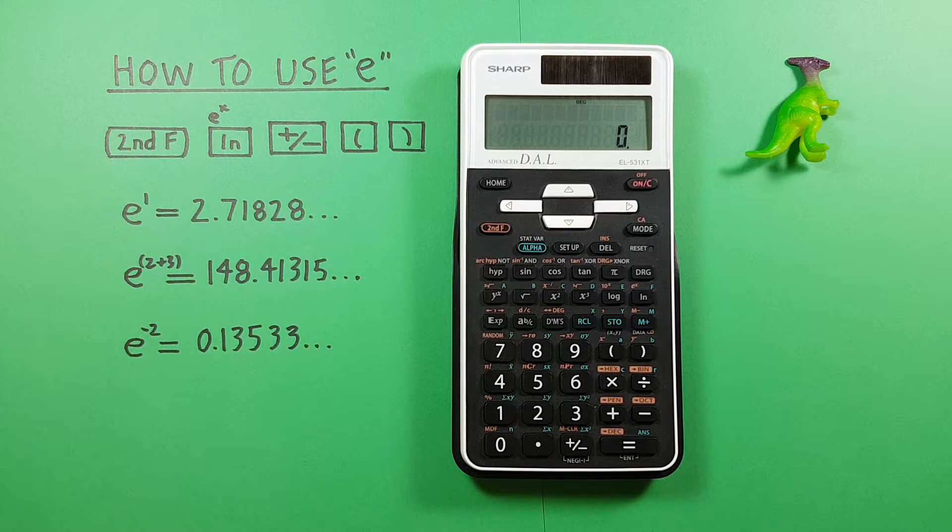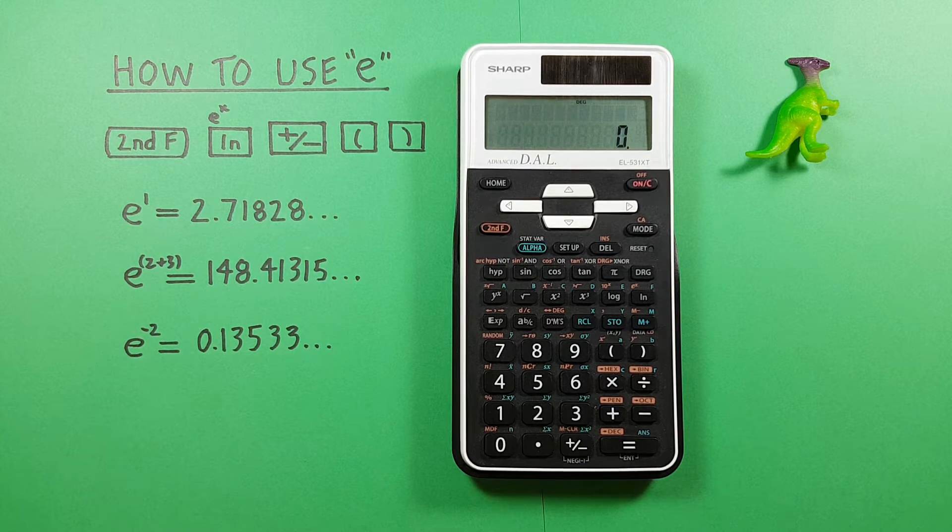Hey there and welcome to HD Calcs. I'm Rick and in this video we're going to have a look at how we can use the constant E, also known as the natural antilog or Euler's number.